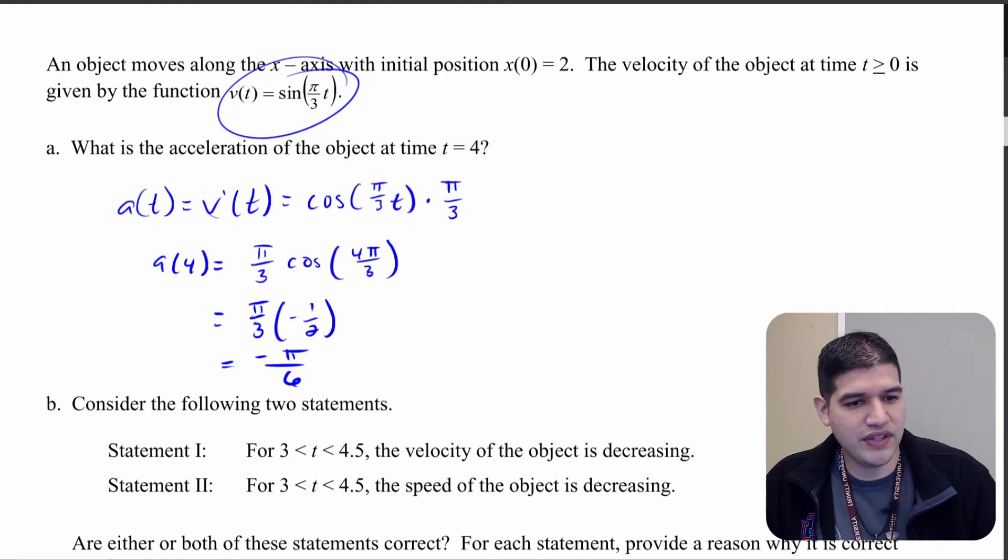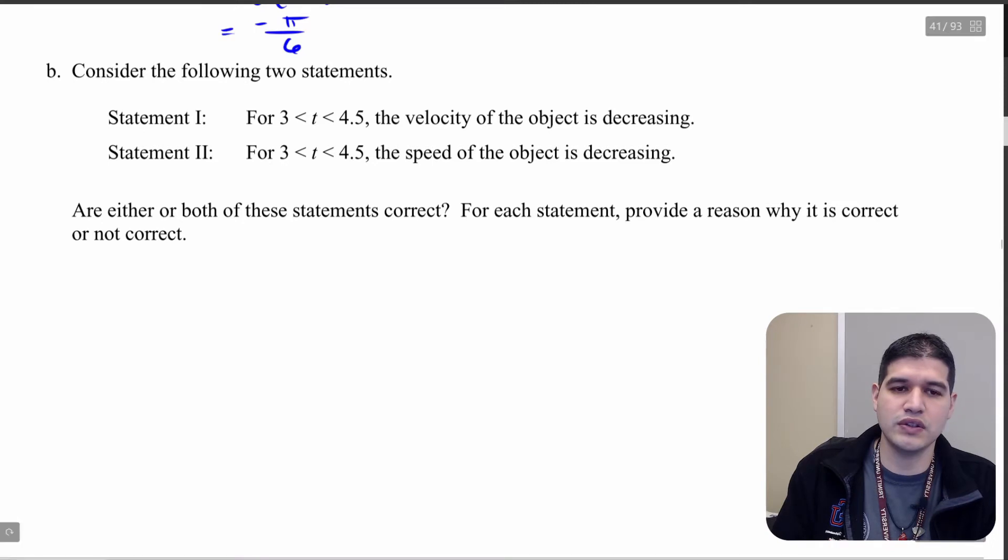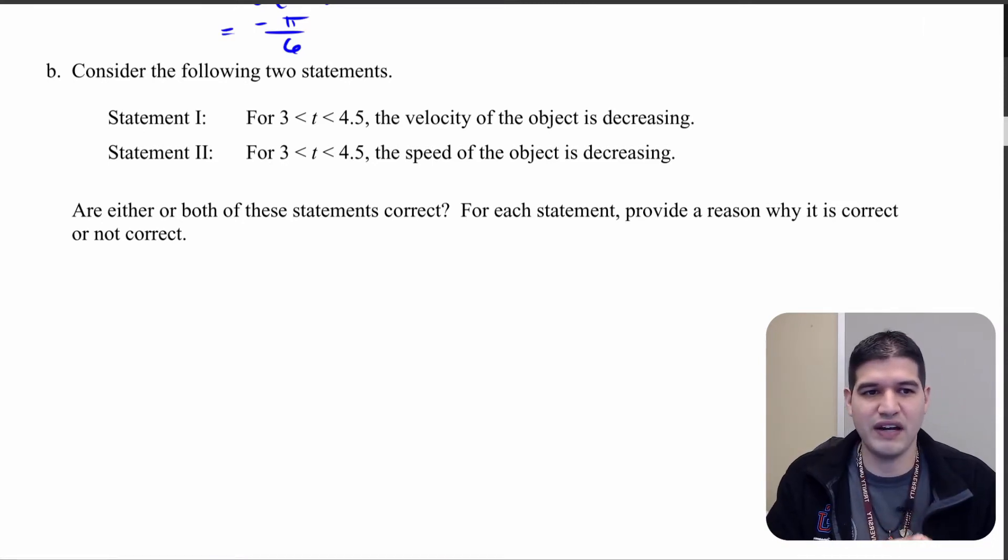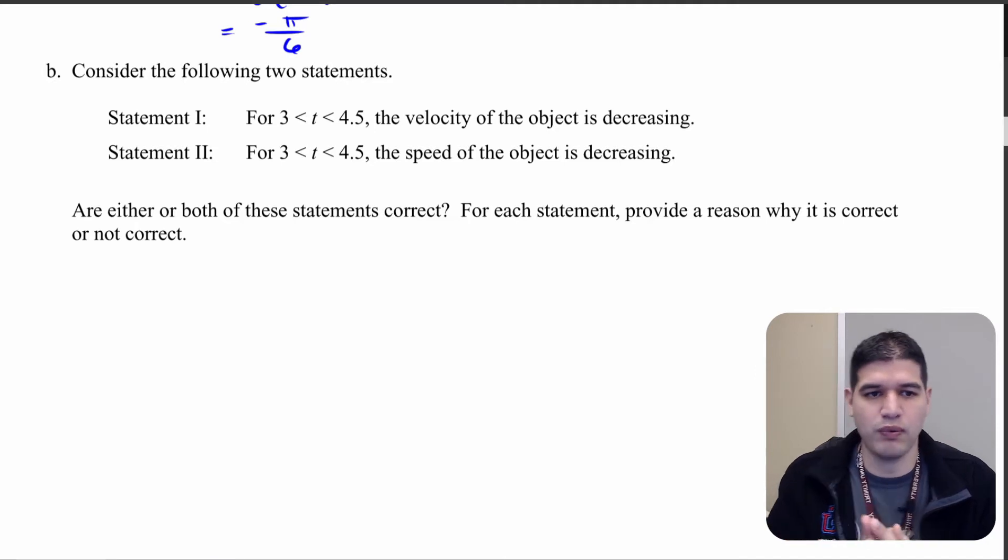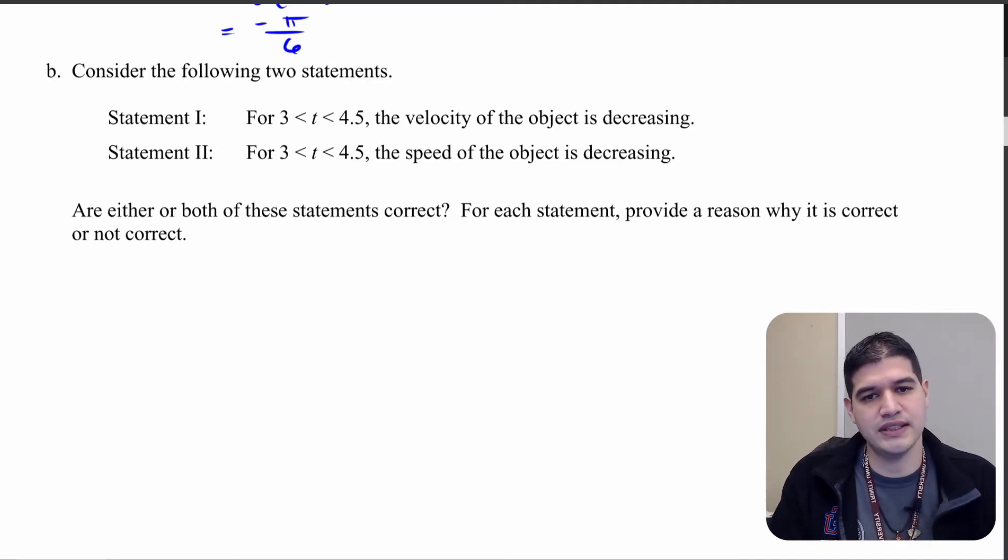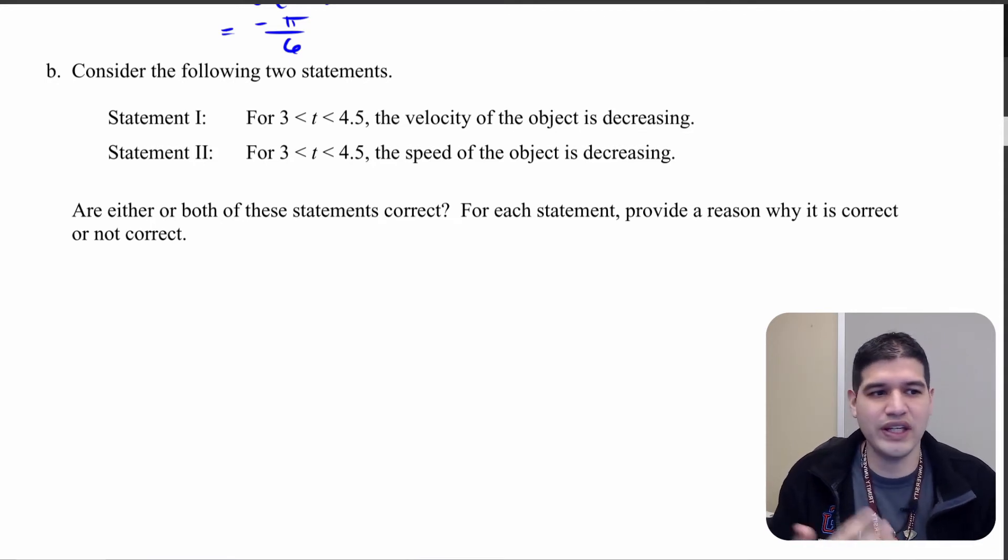So now moving down to our second question, we have two statements where t equals between 3 and 4.5: the velocity of the object is decreasing, and for t from 3 to 4.5, the speed of the object is decreasing. So are either of these statements correct? And for each of them we need to provide reasoning behind it.